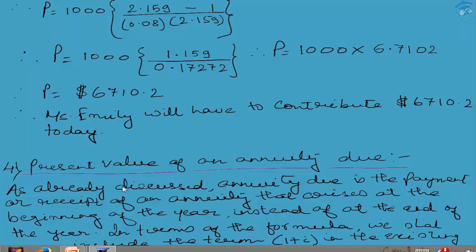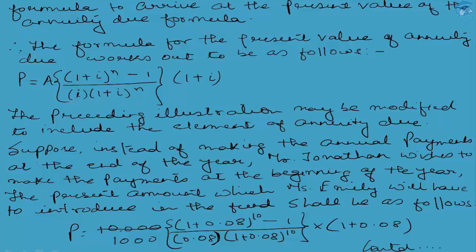As already discussed, annuity due is a payment or receipt of an annuity that arises at the beginning of the year instead of at the end of the year. In terms of the formula, we shall include the term (1 + i) in the existing formula. Why do we use (1 + i)? We have seen while discussing the future value of an annuity due that (1 + i) refers to the one additional earning of interest due to the fact that the annuity due cash flows start at the beginning of the year.